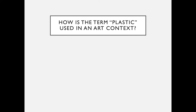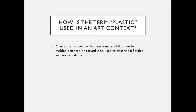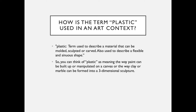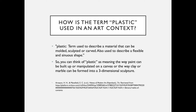How is the term 'plastic' used in an art context? Plastic is a term used to describe a material that can be molded, sculpted, or carved, and also used to describe a flexible or sinuous shape. You can think of plastic as meaning the way paint can be built up or manipulated on a canvas, or the way clay or marble can be formed into a three-dimensional sculpture. This definition is from the glossary of the textbook.